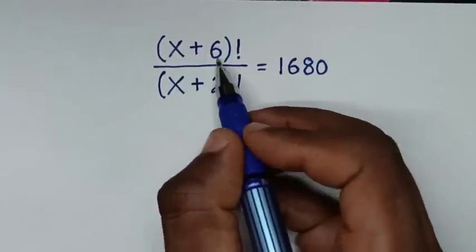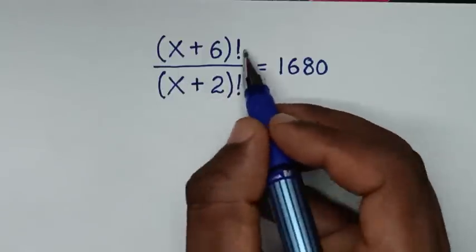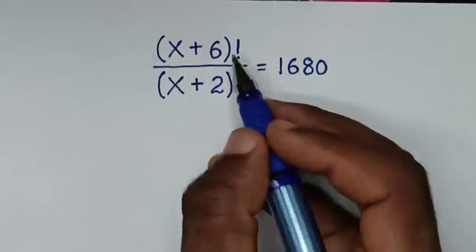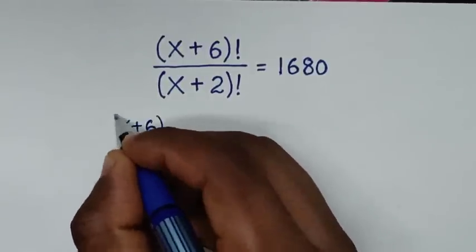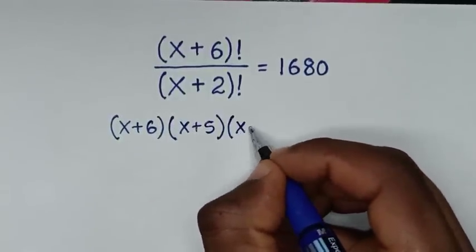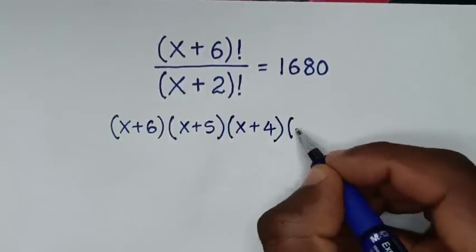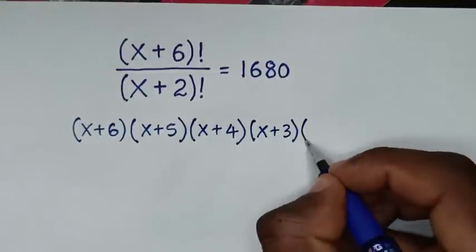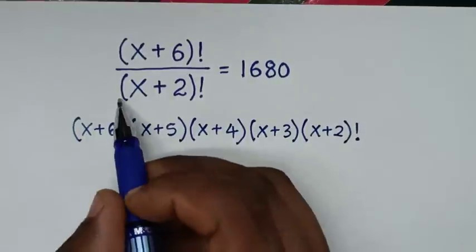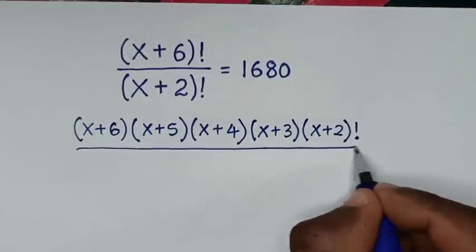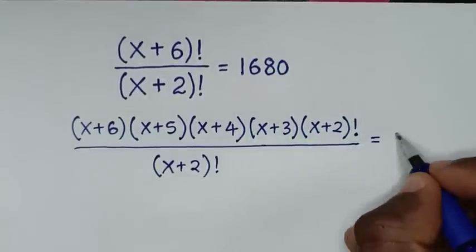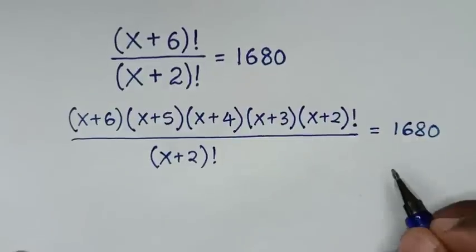In the first step, we take (x+6)! and rewrite it to have a common (x+2)! factor. So (x+6)! is the same as (x+6)(x+5)(x+4)(x+3)(x+2)!, and this is divided by (x+2)! in the denominator, which equals 1680.